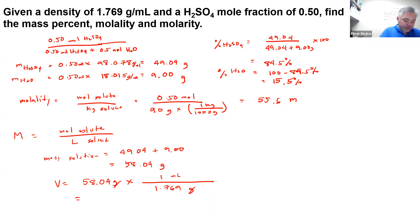So if you're going to do it this way, you cancel out the milliliters, so 58.04 divided by 1.769, so you have here around 32.81 milliliters, and you're going to multiply it with 1 liter over 1,000 milliliters.